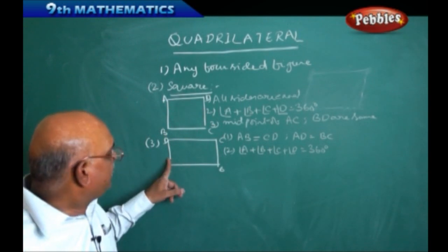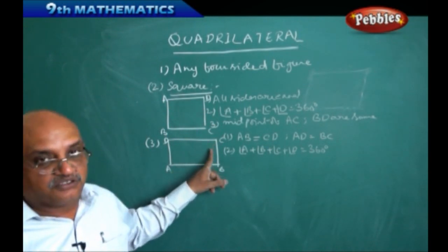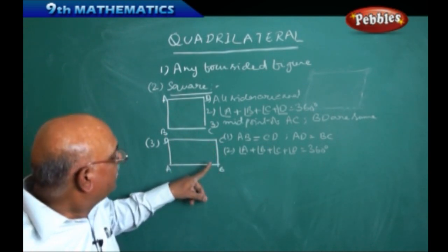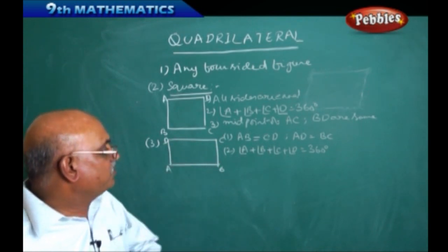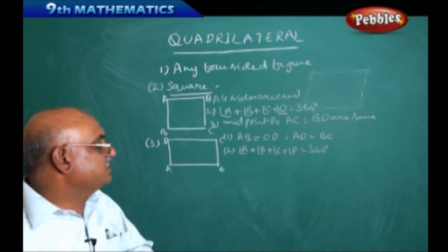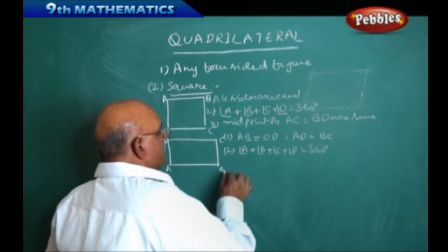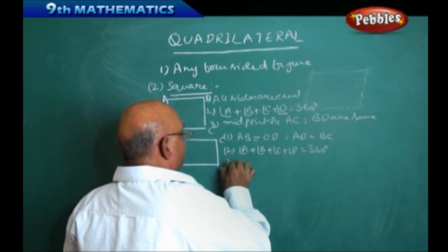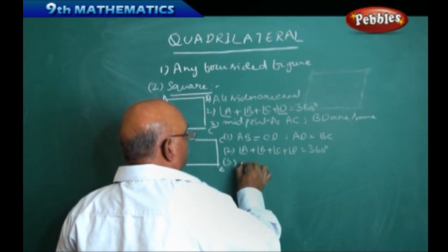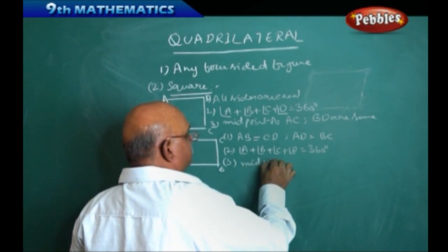Angle A plus angle C equals 180 degrees, and angle B plus angle D equals 180 degrees, but the sum of all four angles equals 360 degrees. The next point is that the midpoint of the diagonals is the same.